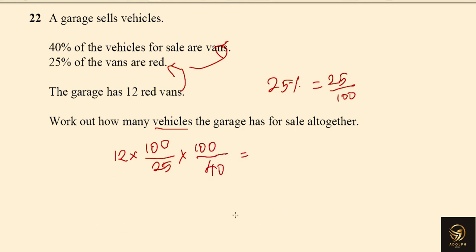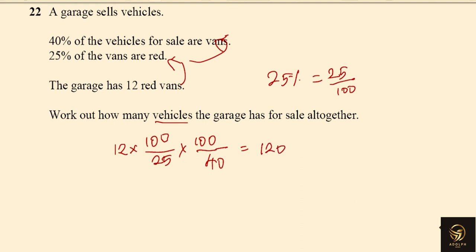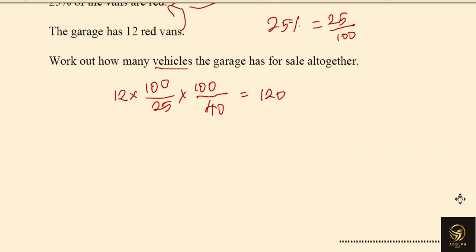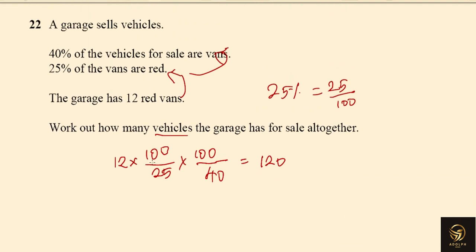If you put everything in the calculator, we are getting 120 as the answer. So there are 120 vehicles in the garage, and this is over. So whenever you have to calculate the backward calculation, multiply the percentage or fraction by its reciprocal. That's it.